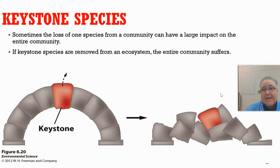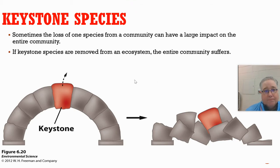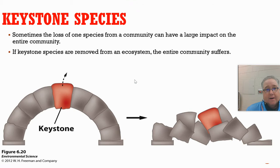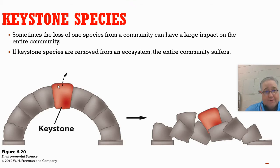Another term is called a keystone species. A keystone species is one that is extremely important to the community. Let's say you have a pond with multiple organisms living there — chances are there's going to be at least one keystone species where, if you removed that species, the entire community will crumble.